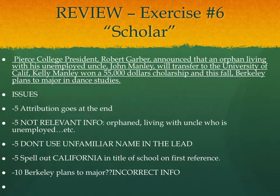Here are some examples of student work that had issues. This particular lead says: "Pierce College President Robert Garber announced that an orphan" — you don't need commas around Pierce College President Robert Garber — "announced that an orphan living with his unemployed uncle, John Manley, will transfer to the University of Cali... John Manley won a $55,000 scholarship, and this fall Berkeley plans to major in dance studies." Lots of problems with this one.